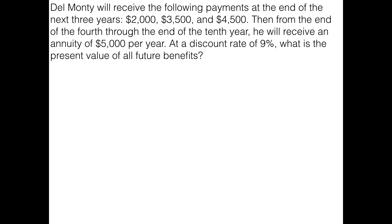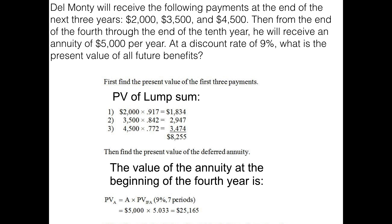The first thing you had to do was find the present value of the first three lump sums. Going into your present value tables you get the present value factor for each one at nine percent. Multiplying those factors times the lump sums, we find that the present value of the lump sum amounts in years one, two, and three is eight thousand two hundred and fifty-five dollars.